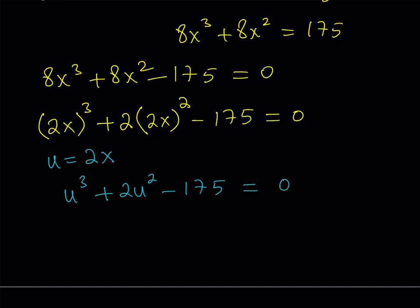Is this equation easier to solve? Definitely. Now you look at factors of 175. Obviously 1 is a factor, but it won't work. 5 is a factor. What other factors do we have? 175 = 5 × 35, so 7 is another factor. You're basically testing all these values. When you replace u with 5: 5^3 = 125, 5^2 = 25. Plugging it in: 125 + 2(25) - 175 = 0. So u = 5 is a solution.